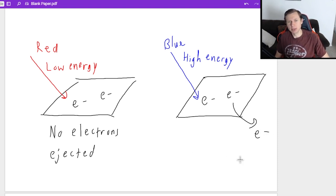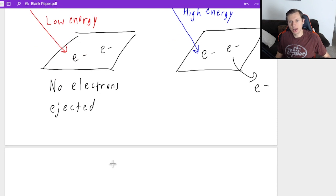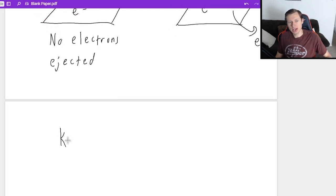Now Heinrich Hertz was kind of a dummy. He was never able to figure out why this was the case. But then a young scientist named Albert Einstein, who you also may have heard of, finally discovered that the reason why some photons, some colors of light are able to eject and others cannot, is because there is an equation that describes this photoelectric effect phenomenon. And that is the equation K equals E minus W.